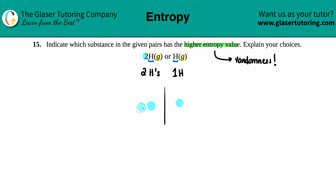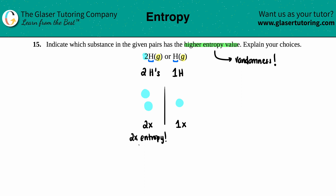Both are moving around, and if you have double the molecules — this system is two times the amount, the other is only one times — I literally doubled the amount of molecules. Since you have double the molecules, you would have double the entropy. So which one has the higher entropy value? It's the one that has more of the same molecule — the 2H gas.